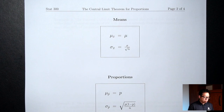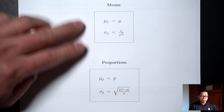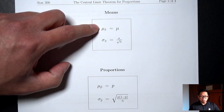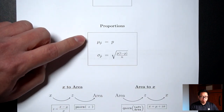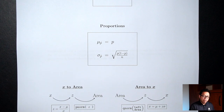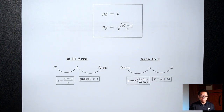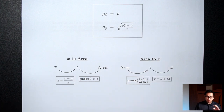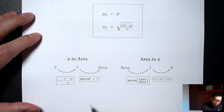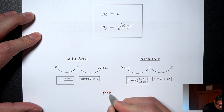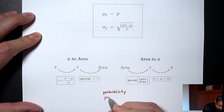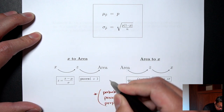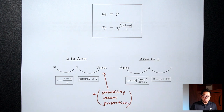The second page is just a formula sheet — the two boxes from the front page recopied. The first box is for the mean situation: what mean and standard deviation to use. The second is for the proportion situation. At the bottom are the workflow diagrams for x-to-area and area-to-x questions. Remember that anytime you see the three P words — probability, percent, proportion — it refers to an area.